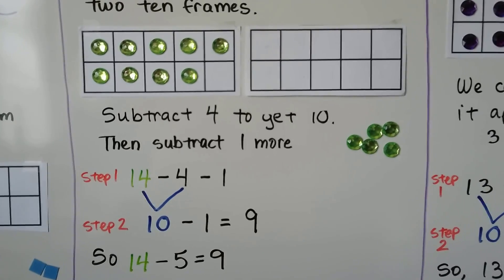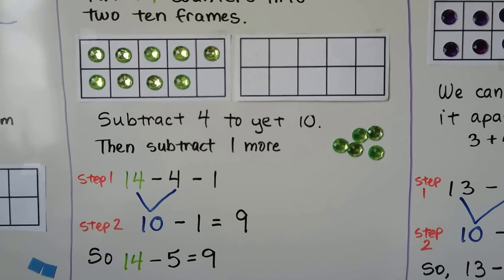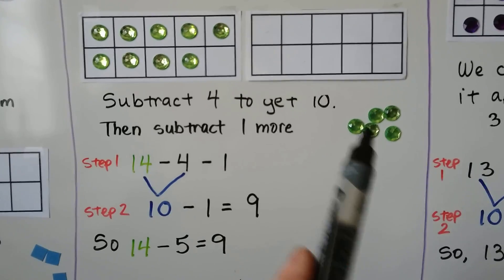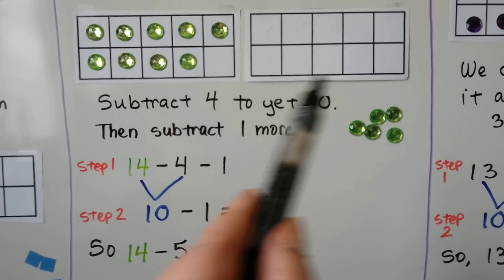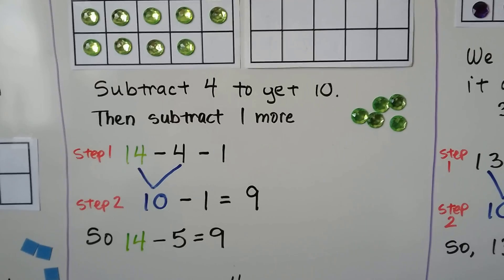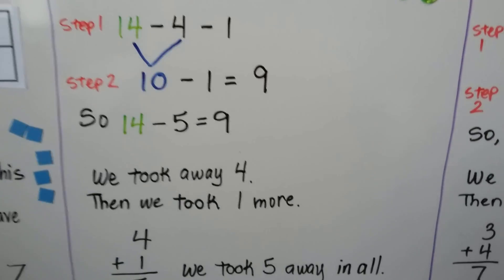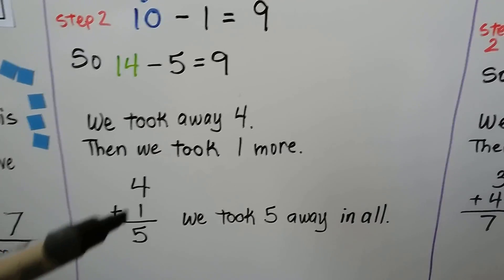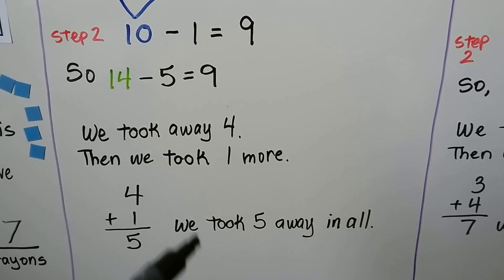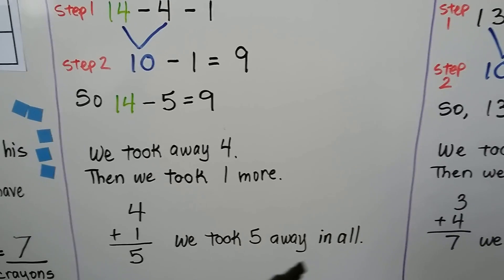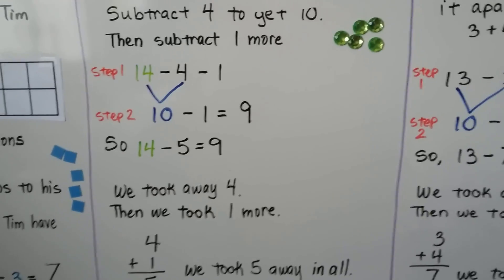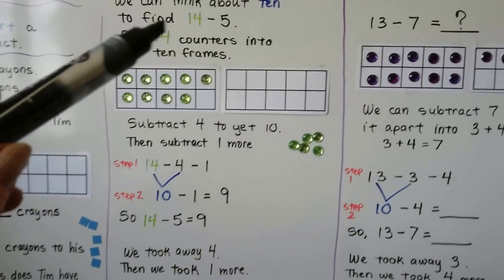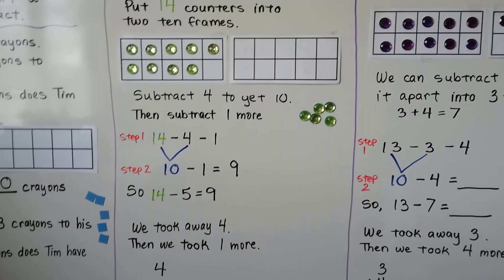So 14 minus 5 is equal to 9. We took away 4 and 1 more, and that made 5 in all. We took away 4, we took away 1 more, and 4 plus 1 is equal to 5. We took away 5 in all and we have 9. 14 minus 5 is equal to 9.